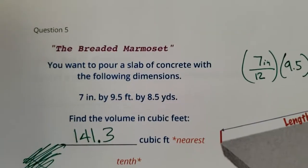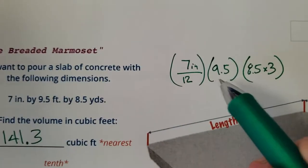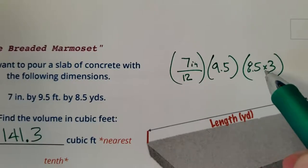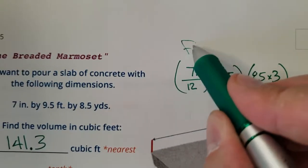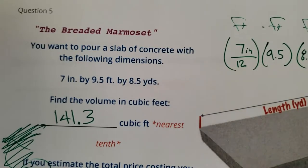All right, cool. That was the breaded marmoset. Again, what do you do? I would put the inches over 12. I'd leave the feet as feet. And I would take the yards times three, because technically what you're doing is you're taking a foot times a foot times a foot, and that's going to get you cubic feet.